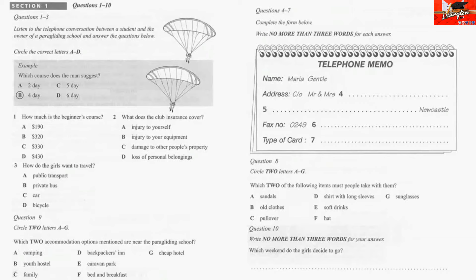The girl is telling her friend about the course. Look at questions 8 to 10. Now listen to their conversation and answer questions 8 to 10. Hi, Pauline. Hi, Maria. What's that you're reading? Just some information from a paragliding school. It looks really good fun. Do you fancy a go at paragliding? Sure.